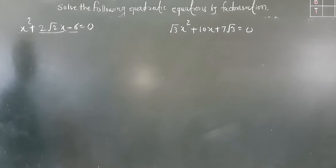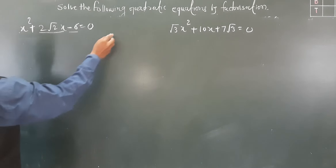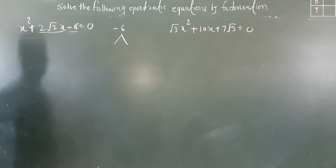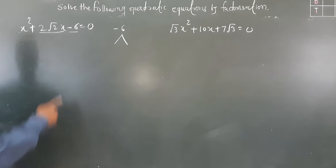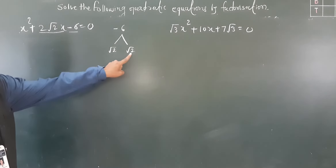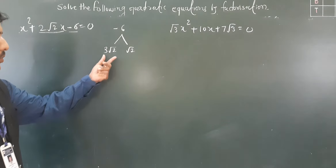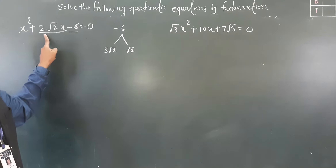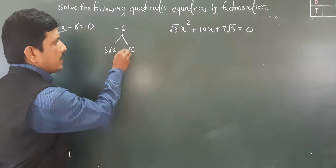Now we will see some more examples with factorization. The next equation is x² + 2√2·x − 6 = 0, solved by splitting the middle term. We multiply: minus 6 × 1 = minus 6. We need factors of minus 6 whose sum is 2√2. Since we need √2 in the factors: 3√2 − √2 = 2√2 and 3√2 × (−√2) = −3 × 2 = −6.